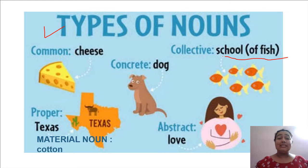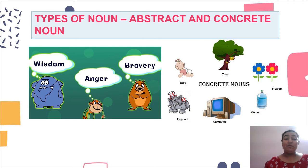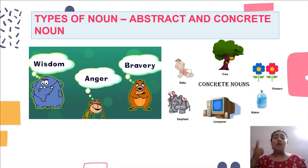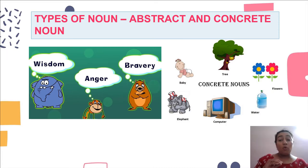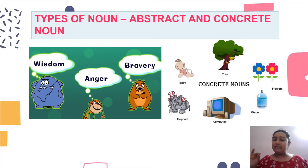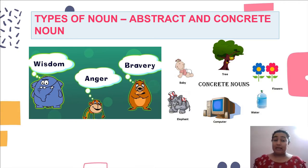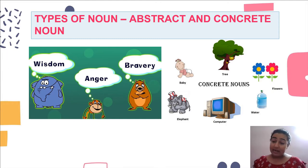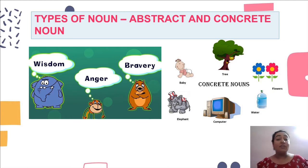Today we'll be discussing the different types of nouns available to us. First is the abstract noun and the concrete noun. I'll start with abstract and concrete, because the moment you understand what abstract nouns and concrete nouns are, you will easily be able to identify material noun, common, proper, and collective noun. Abstract noun: anything that is abstract is not visible to us — we cannot see it, we cannot touch it, we can only feel it.